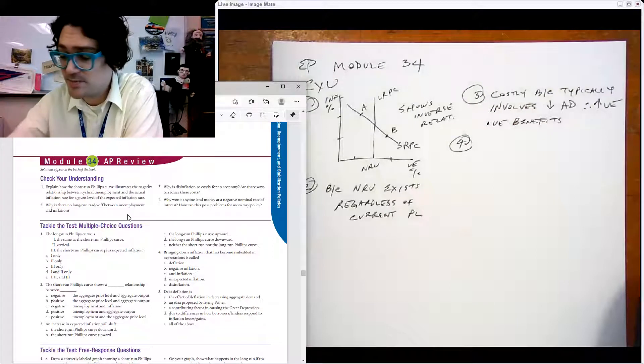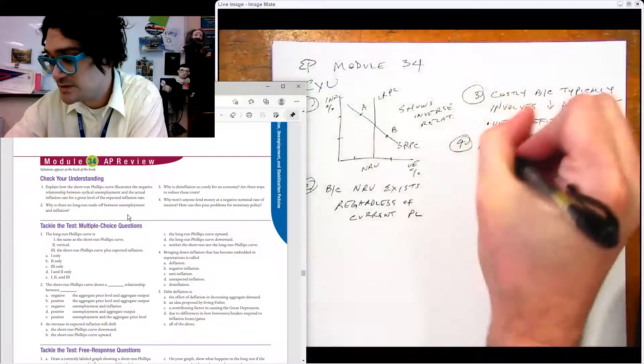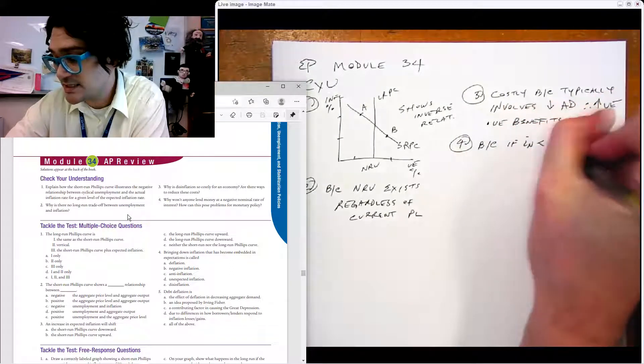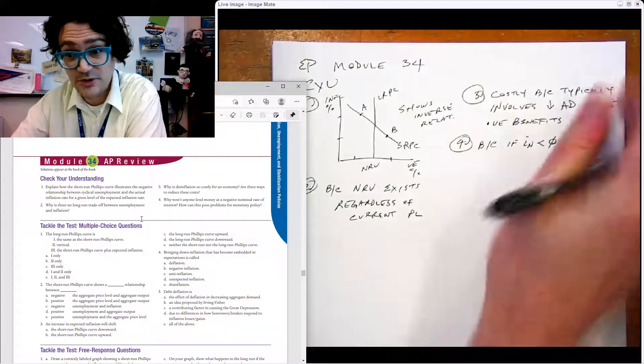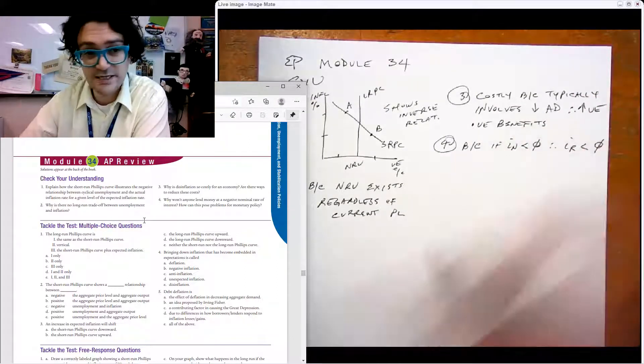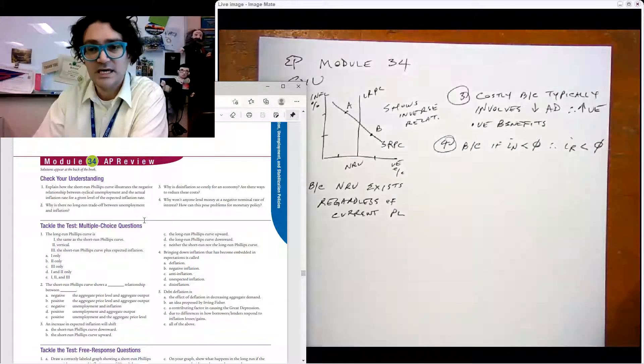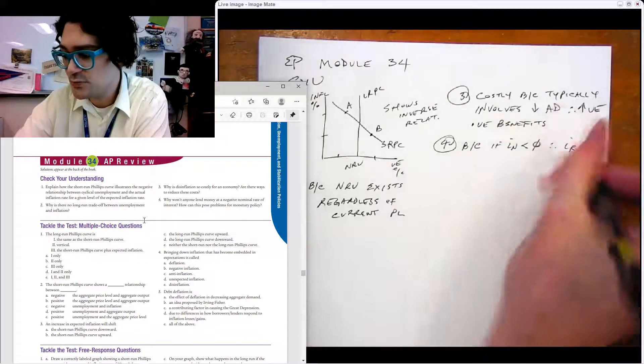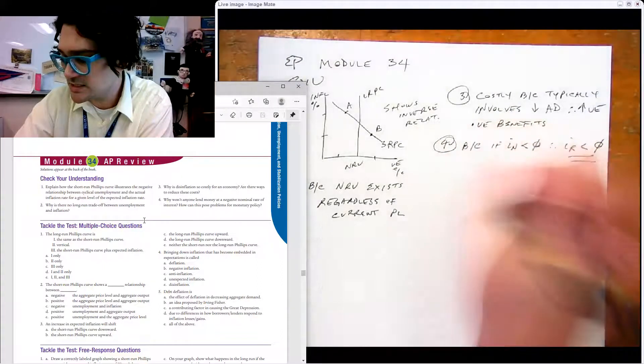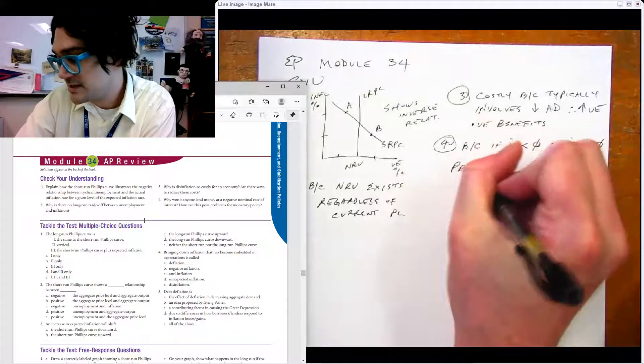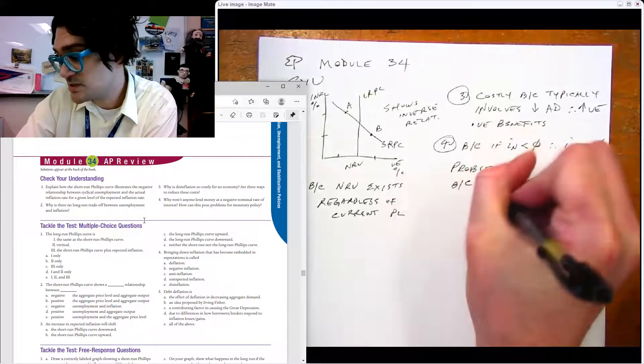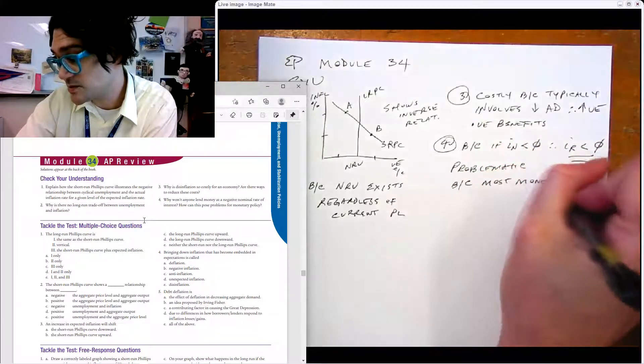Number four says why won't anyone lend money at a negative nominal rate of interest? How can this pose problems for monetary policy? Because if the interest rate nominal is less than zero, we can say therefore fairly clearly the interest rate real is less than zero. It necessarily has to be, and so you wouldn't lend if that was the case. There's no reason to.